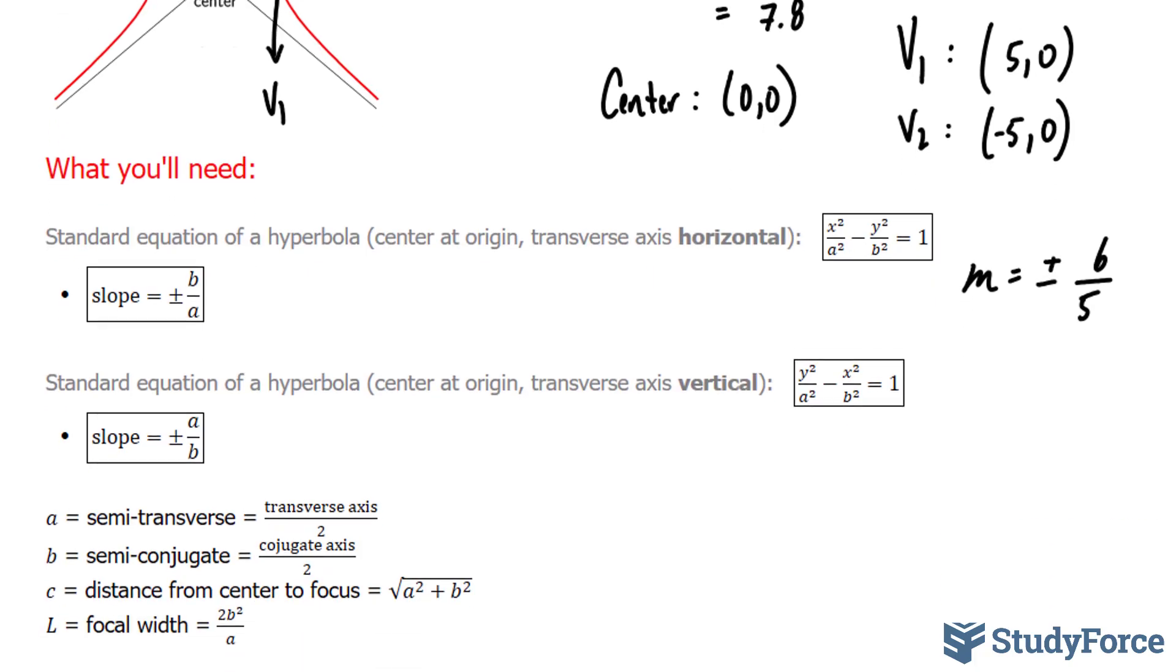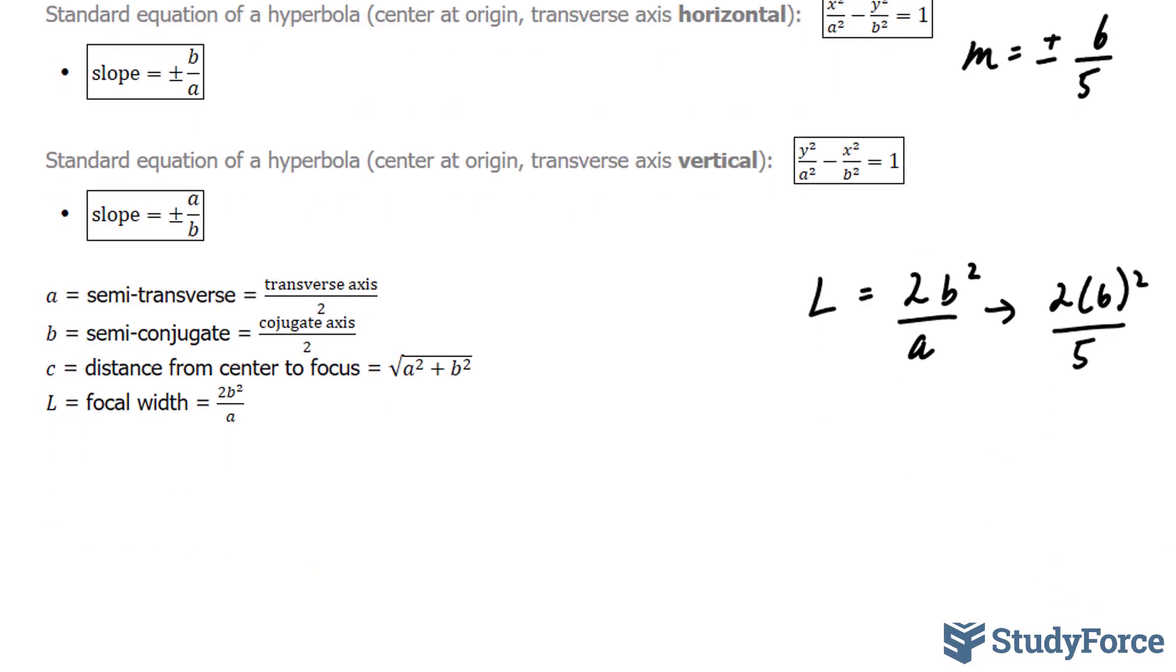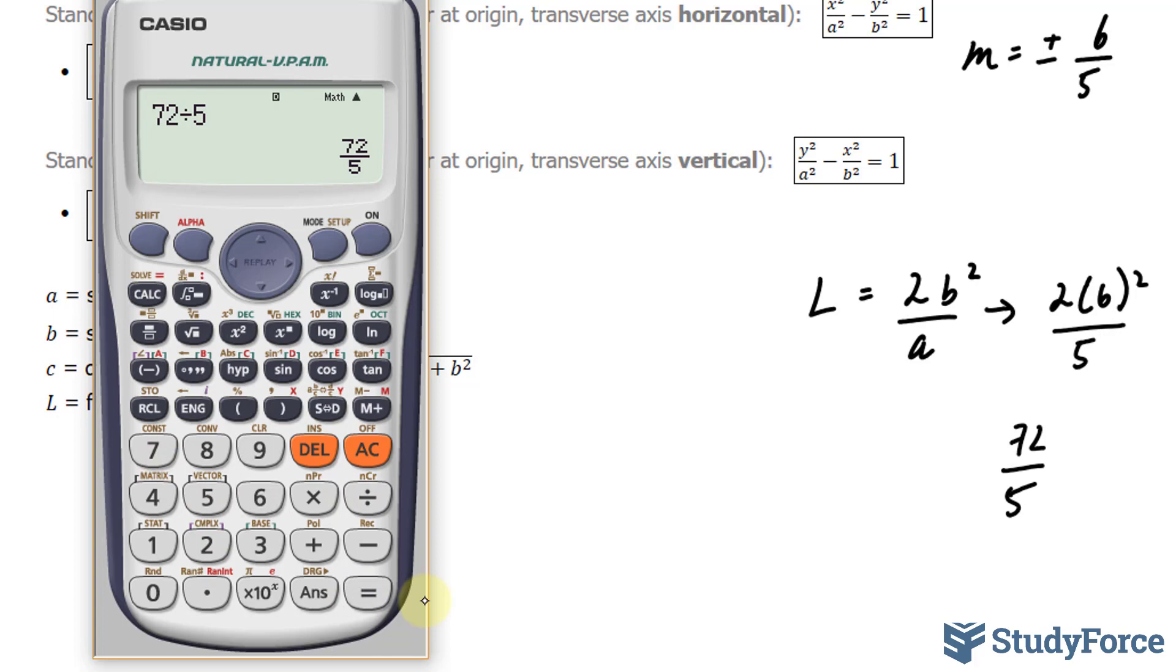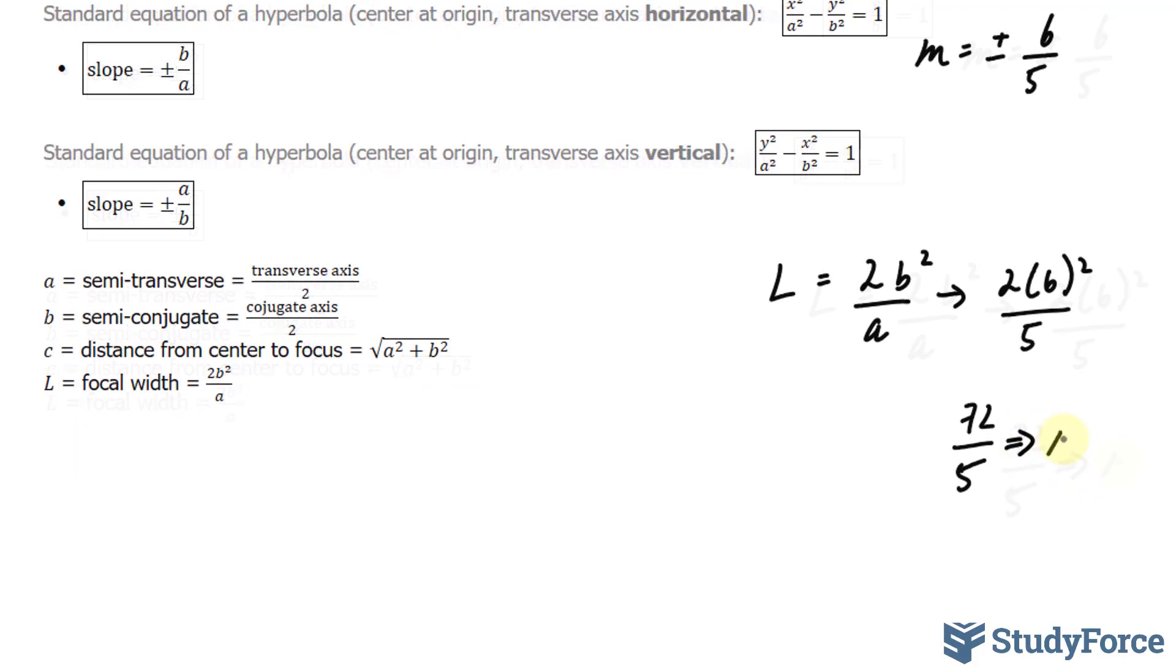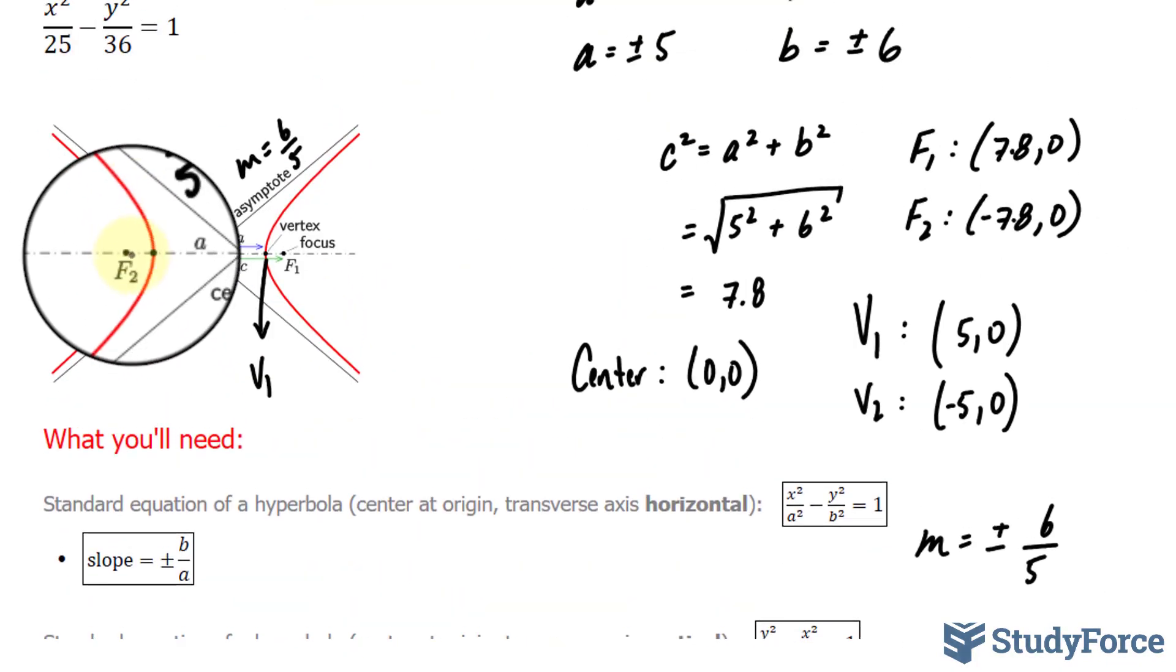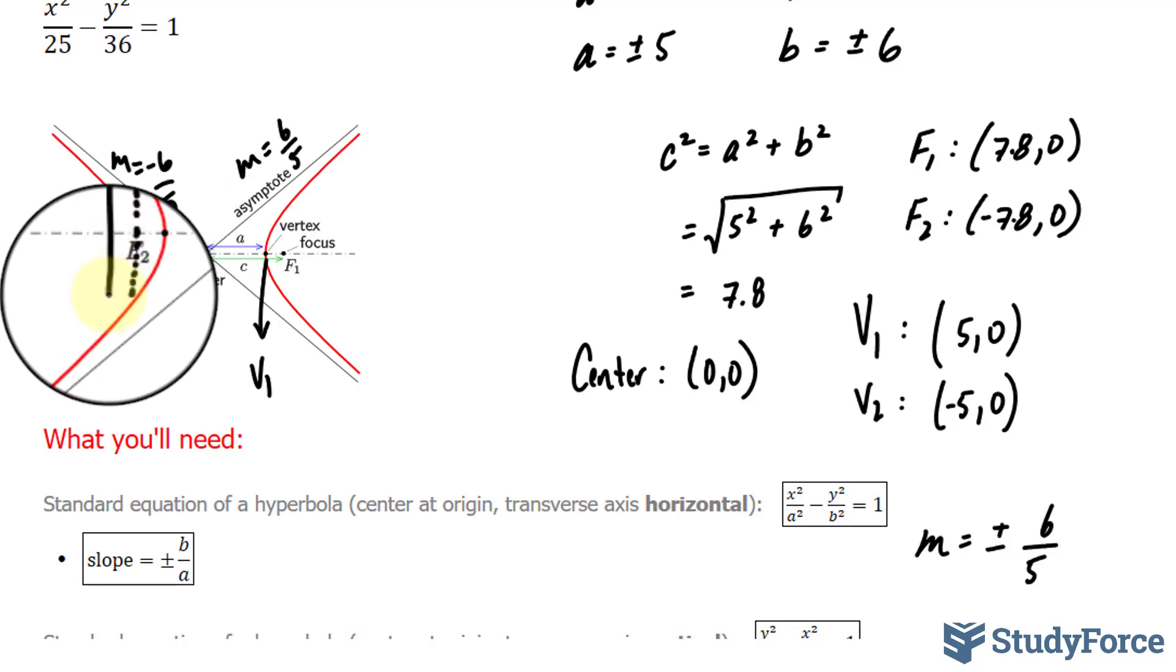The last thing that we are looking for is the focal width, and we'll use the formula l is equal to 2 times b squared over a. b we know is 6, so we have 2 times 6 to the power of 2 over 5. 6 to the power of 2 is 36 times 2, that's 72, 72 over 5, and we'll use our calculator for this, gives us 14.4. That represents the distance from the focus to the red. So this right here represents the length of the focus.